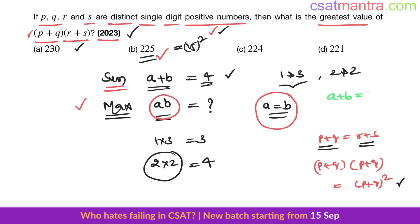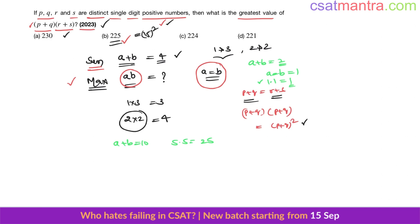If sum is 2, a equals b equals 1, product is 1 into 1, which is 1. This is the maximum product we can have. If sum is lesser, product we are getting is lesser. If sum is 10, product would be 5 into 5, which is 25. As the sum increases, product will also increase.